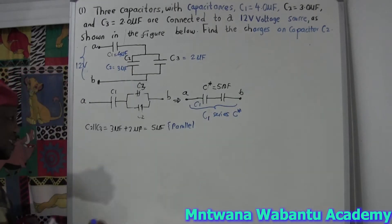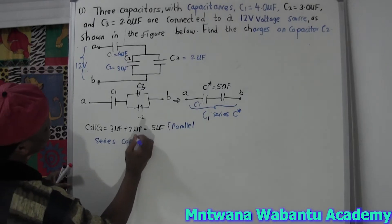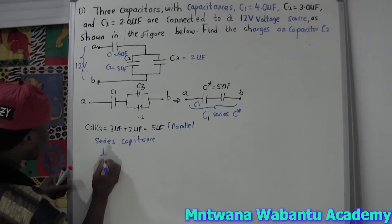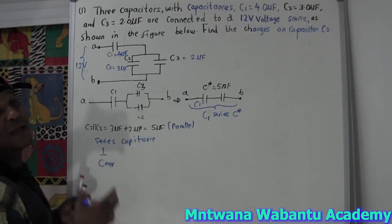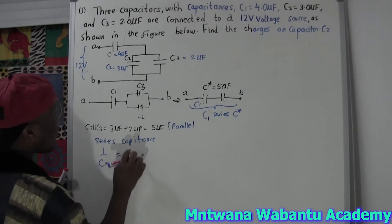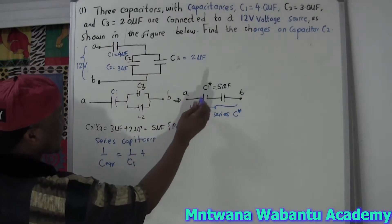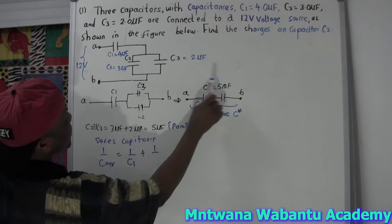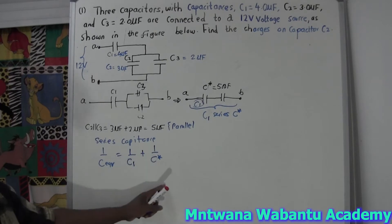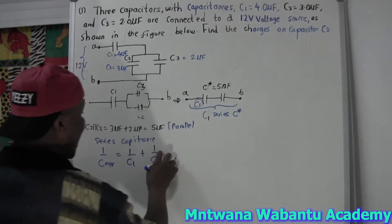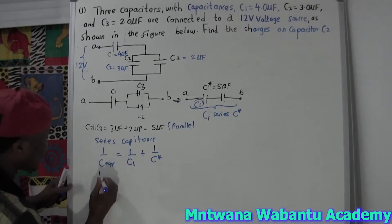For series capacitance, one over C_equivalent equals one over C1 plus one over C_star. Even if you had more capacitors, you'd keep adding terms. But here we only have two.